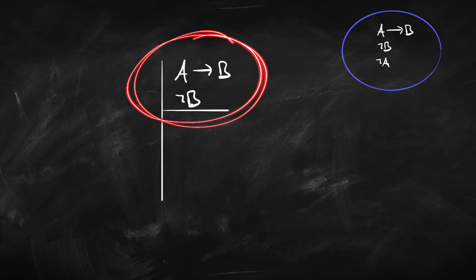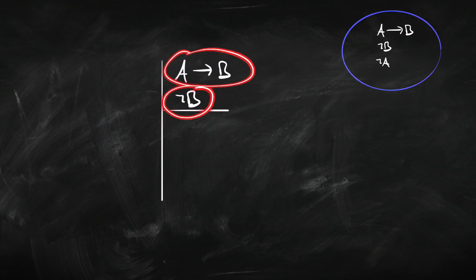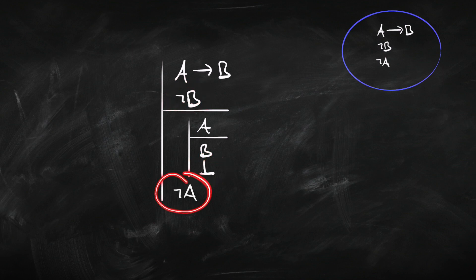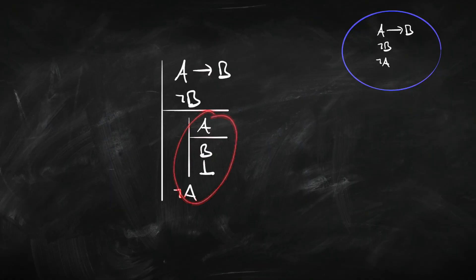So now let's see how we go about deriving modus tollens using our existing rules. We're going to start off assuming the premises: 'if A then B' and 'not B'. We have to use our existing rules and we're going to try to prove 'not A'. Since that's a negation, the best bet is to use reductio ad absurdum — so we assume A and try to infer a contradiction. We assume A, which allows us to derive B using arrow elimination. That gives us a contradiction, so we infer the falsum and then we get 'not A'. Here are the premises of modus tollens, here's the conclusion. We inferred modus tollens just using reductio ad absurdum and modus ponens.